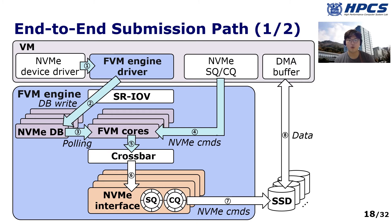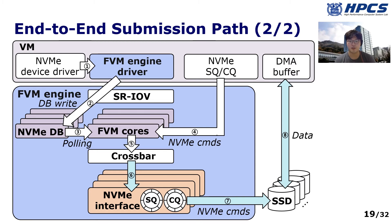After that, the FVM cores manipulate the received NVMe commands and forward them to the back-end. The back-end implementation moves the NVMe commands to the submission queue in FVM engine's on-chip memory. At step 7, the back-end NVMe interface rings the doorbell register located in the NVMe devices to notify the number of newly submitted commands. Then the NVMe device fetches the NVMe commands through PCIe peer-to-peer communications and processes the commands.